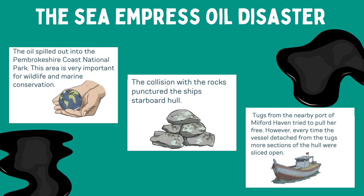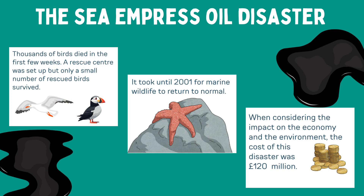The oil spilled out into the Pembrokeshire Coast National Park, an area very important for wildlife and marine conservation. The collision with the rocks punctured the ship's starboard hull. Tugs from the nearby port of Milford Haven tried to pull her free, however every time the vessel detached, more sections of the hull were sliced open. Thousands of birds died in the first few weeks. A rescue centre was set up but only a small number of rescued birds survived. It took until 2001 for marine wildlife to return to normal.